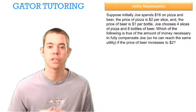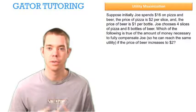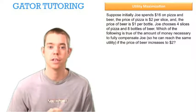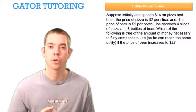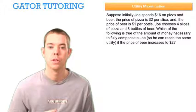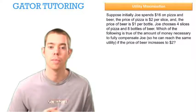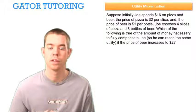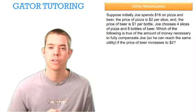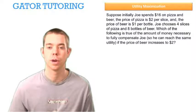Suppose initially Joe spends $16 on pizza and beer. The price of pizza is $2 per slice and the price of beer is $1 per bottle. Joe chooses 4 slices of pizza and 8 bottles of beer. The question asks which of the following is true of the amount of money necessary to fully compensate Joe so he can reach the same level of utility if the price of beer increases to $2 per bottle.